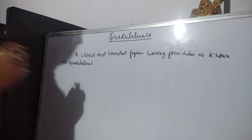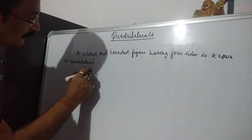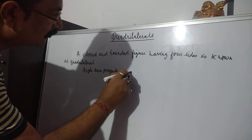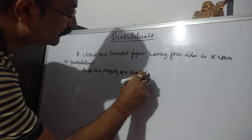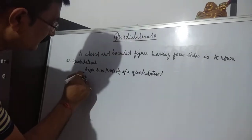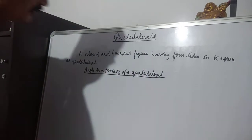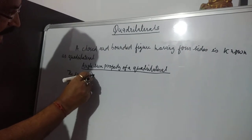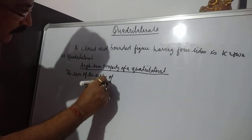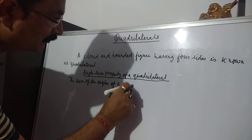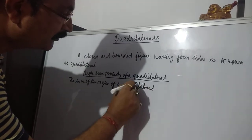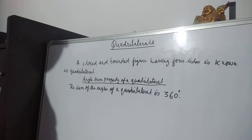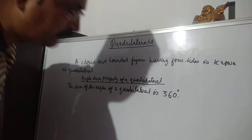Now come to the angle sum property of quadrilateral. The sum of the angles of a quadrilateral is 360 degrees. Now it needs a proof. Come to the proof.